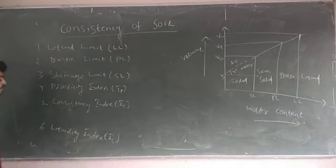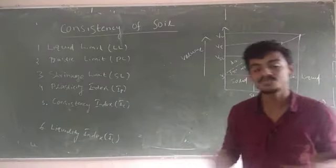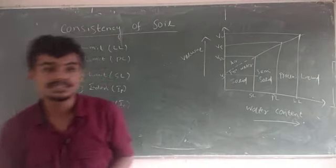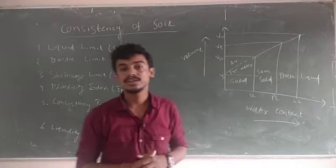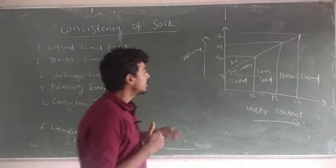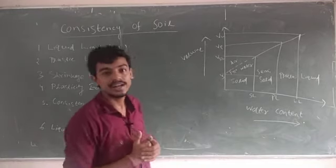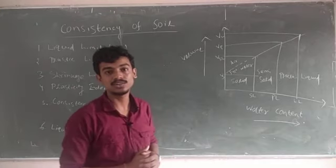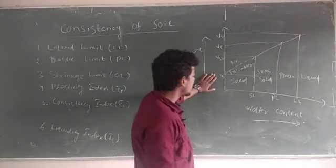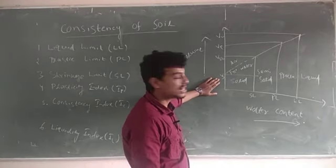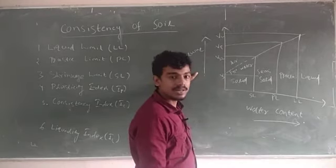After completion of these six terms, the chapter will be over. Only these things are in your syllabus at diploma level. In this graph all these things will become clear — you will remember all the formulas and concepts. The graph is showing two parameters: water content on the x-axis and volume on the y-axis.